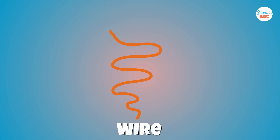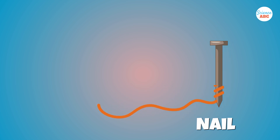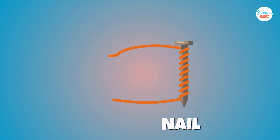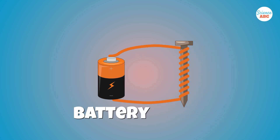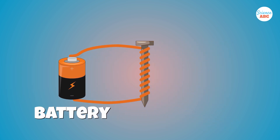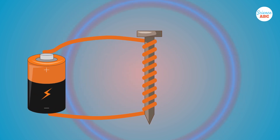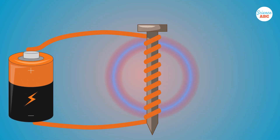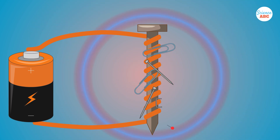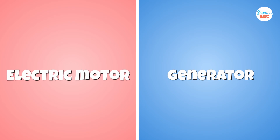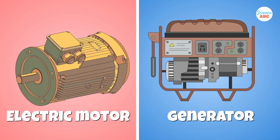If you wrap a wire around an iron nail and then connect the ends of the wire to a battery, you essentially create an electromagnet. The electric current that runs through the wire creates a magnetic field, transforming a simple iron nail into a magnet. This principle is used in many modern appliances, such as motors and generators.